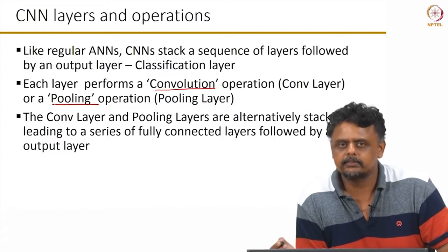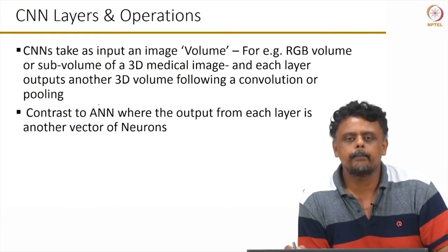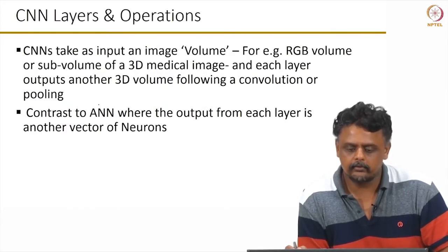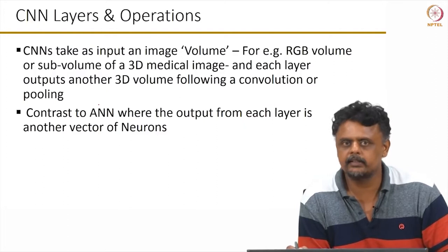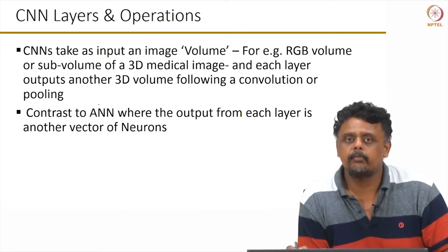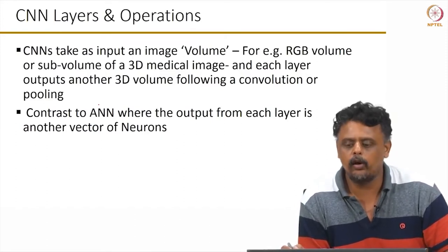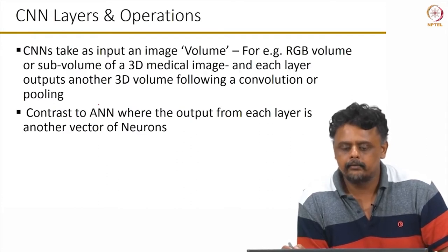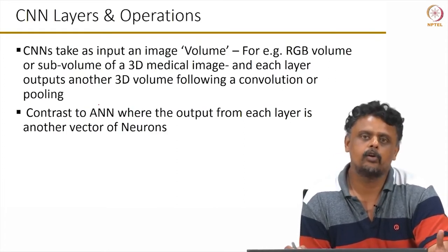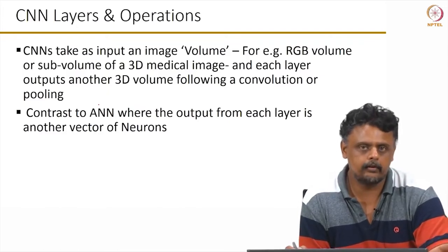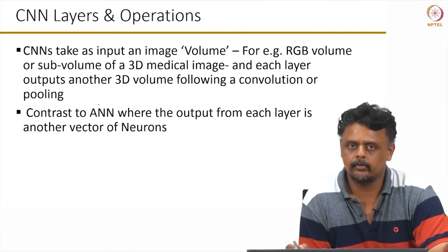Why do we have this kind of structure? What does convolution accomplish? CNNs take images — which can be multi-channel, a simple example being an RGB image with three channels — as input, i.e., a volume. In each layer, a CNN outputs a volume, irrespective of whether it is a convolution or pooling layer. This is in contrast to ANNs, where the output of every layer is basically another vector of neurons.